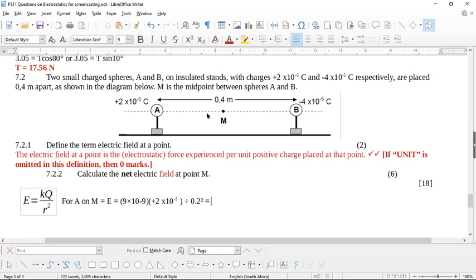And if you work this out in your calculator, you should get 4.5 times 10 to the negative 6 newtons per coulomb. I'm not writing newtons per coulomb because it's a thundering nuisance.